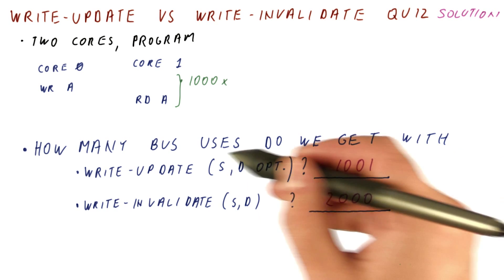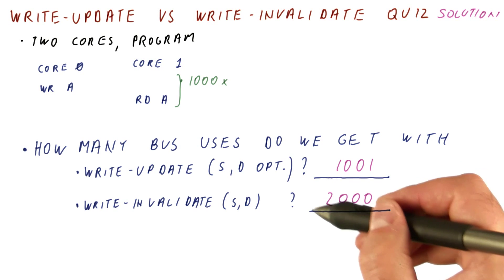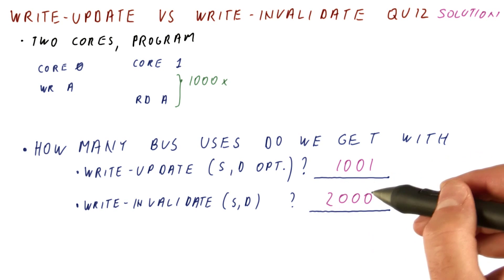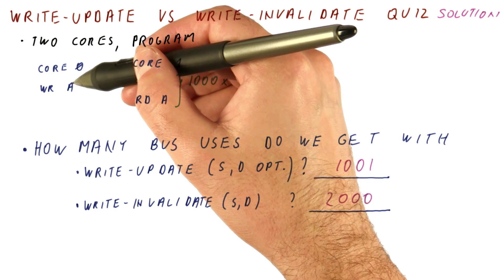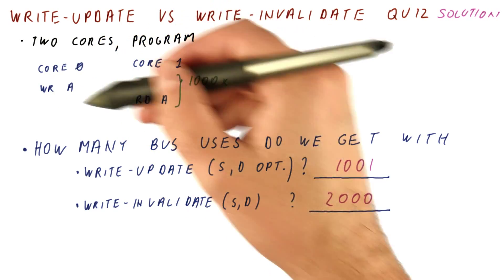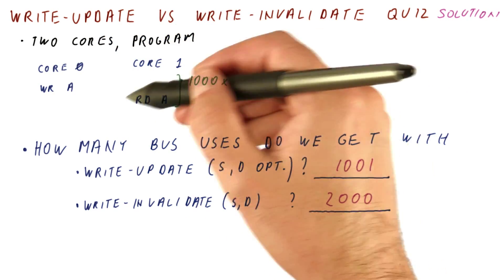So as you can see, write-update is a lot more efficient than write-invalidate if we actually have a pattern where one core produces the data continuously and the other one keeps reading that data.